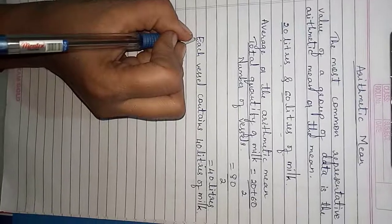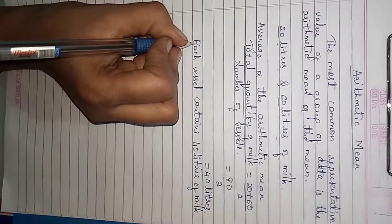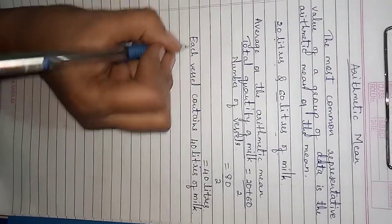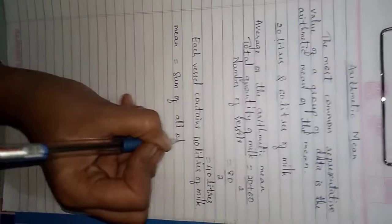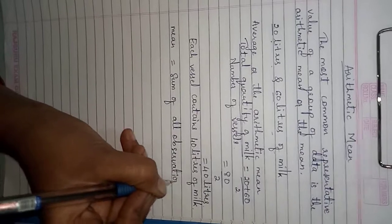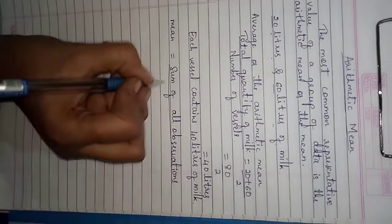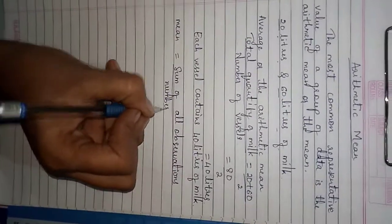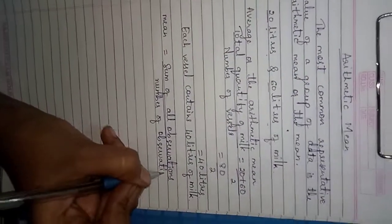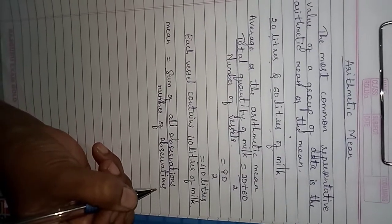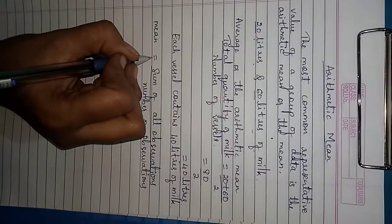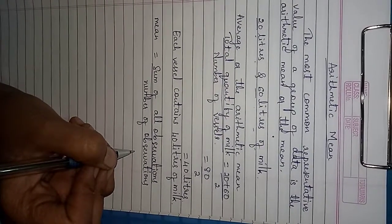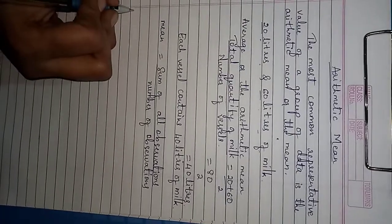Now, the average or the arithmetic mean, or simply the mean, is defined as: Mean equals to sum of all the observations divided by number of observations.